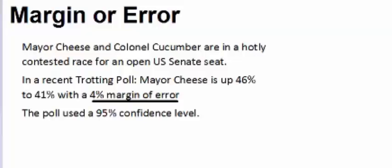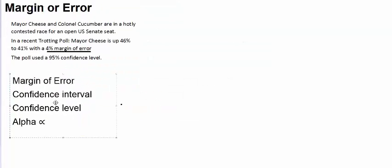An obvious question here would be, is there a clear leader? Does Mayor Cheese or Colonel Cucumber have a clear lead in this election for an open U.S. Senate seat? There are four terms I want to focus on as we discuss whether or not there's a clear leader. Those four terms are margin of error, confidence interval, confidence level, and alpha. Being able to appropriately use these four terms will make life easier for you when we get to the next step, calculating the margin of error.